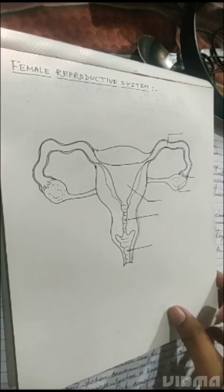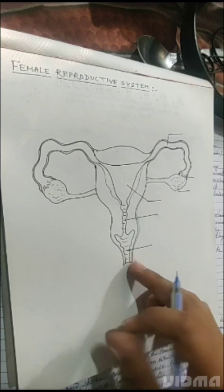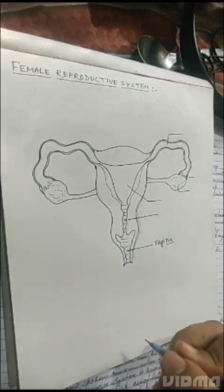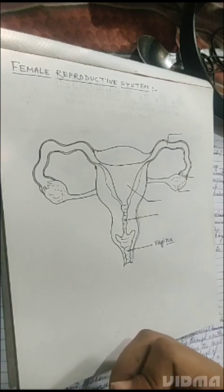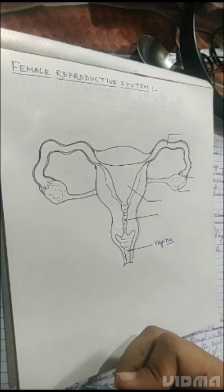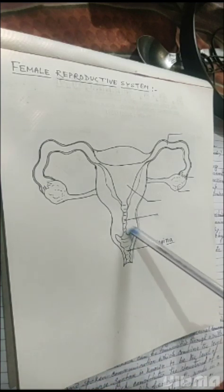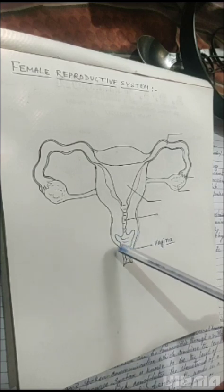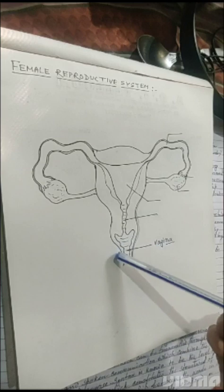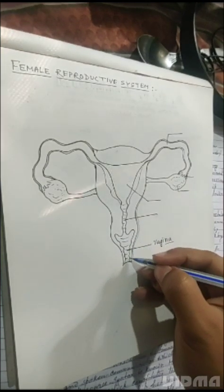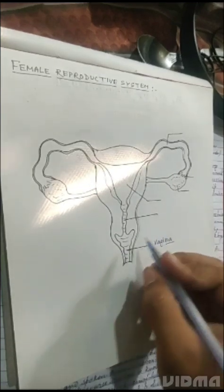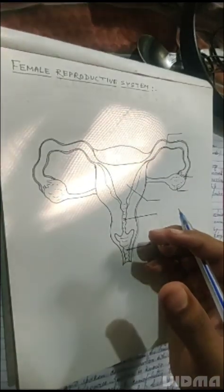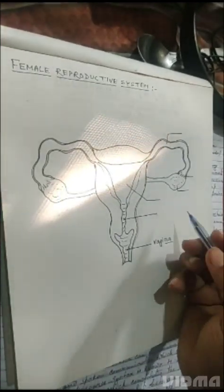First of all, at the bottom we have the vagina. During sexual activities or copulation, the male penis ejaculates sperm onto the vaginal surface, and then it moves upwards. This part has a ciliated, fimbriated structure that helps to sensitize both male and female sexual organs during the process.